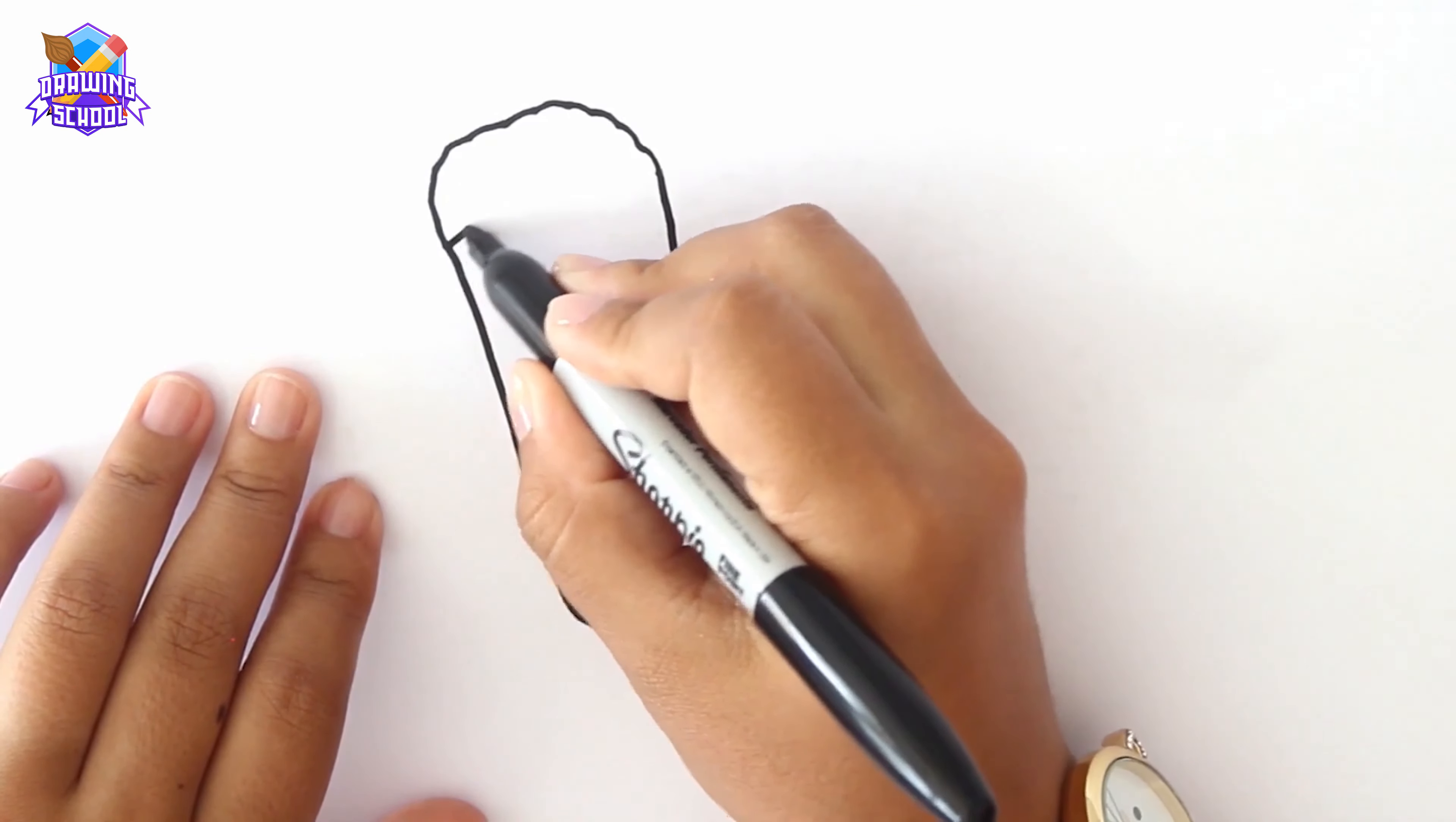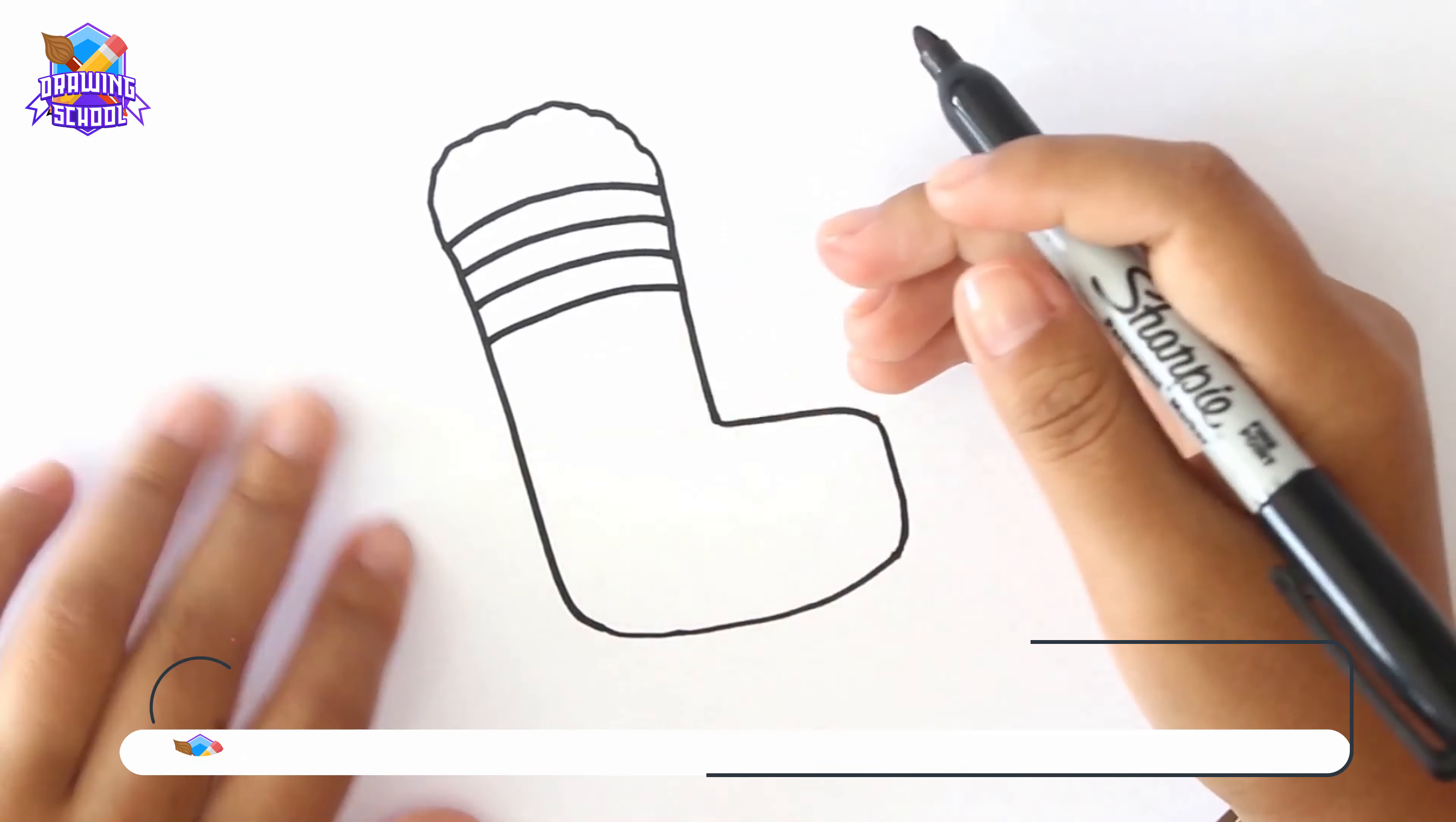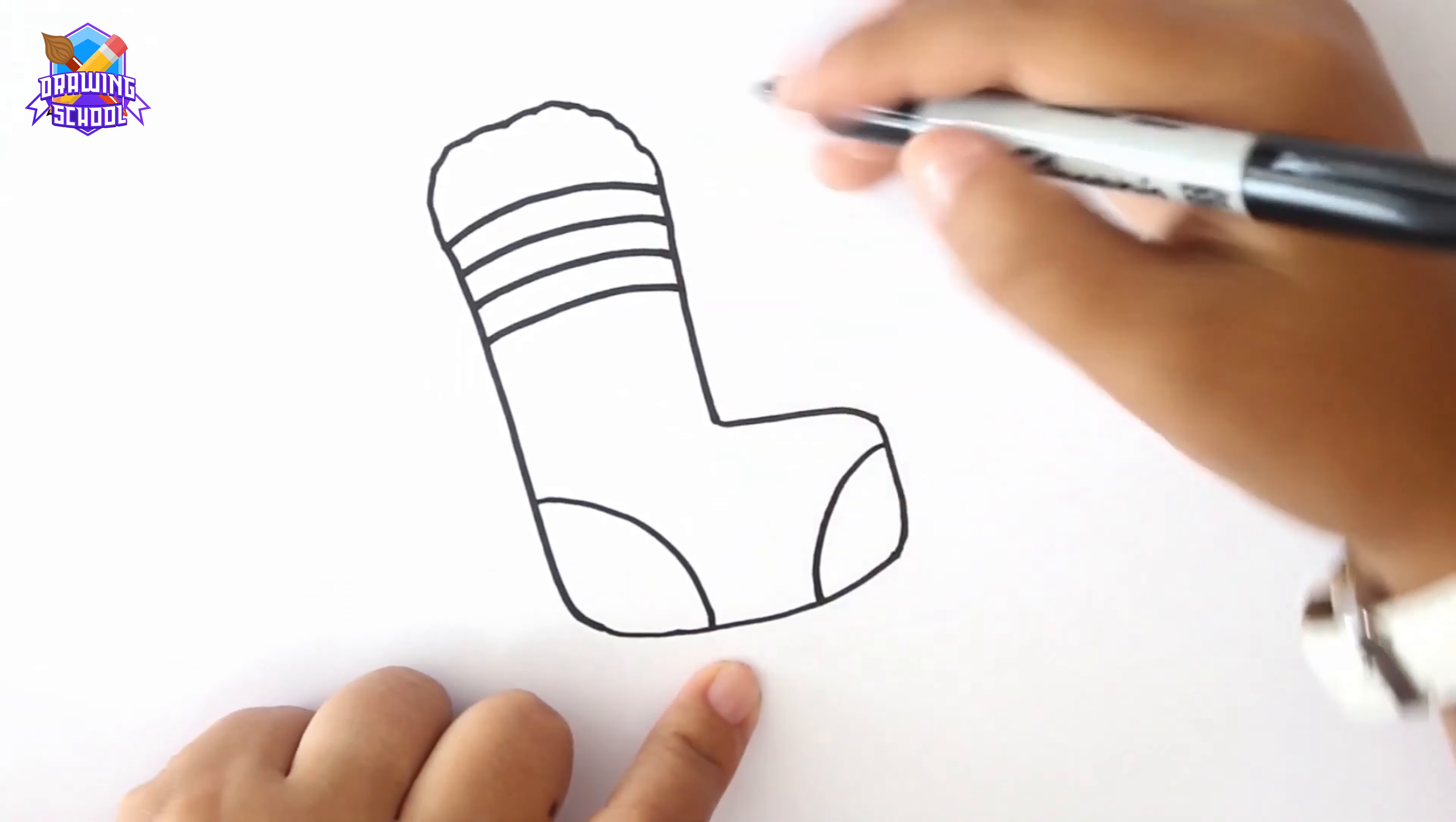Now we add some details like this lines and a curved line for the ankle. We already have our first one.